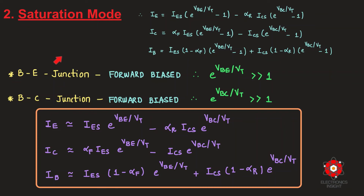In saturation mode, both the base-emitter and base-collector junctions are forward biased. The external applied voltages are large, so the exponential terms containing VBE and VBC are much greater than 1, and the '−1' terms are neglected. After applying these approximations to the DC terminal current expressions, the NPN transistor behaves like a closed-state switch.